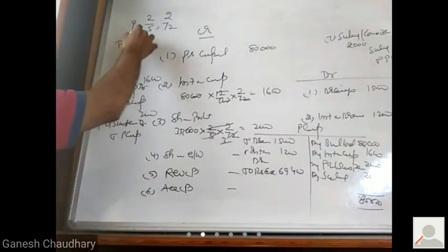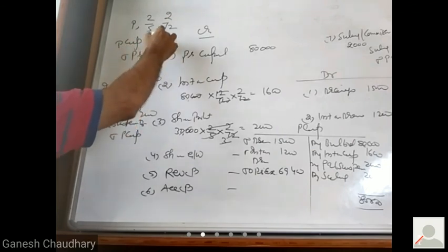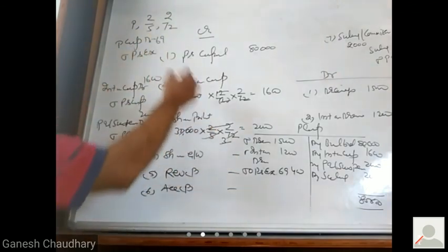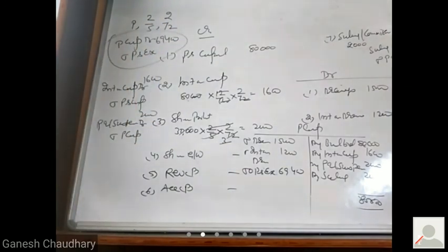So last entry will be P's capital account debit to P's executor account 69,000. Last entry. Do it, complete.